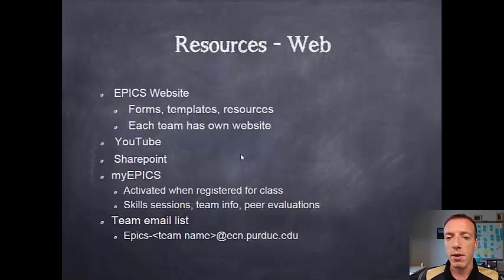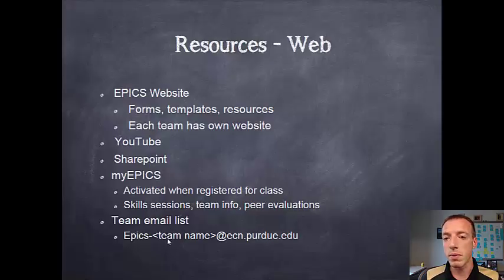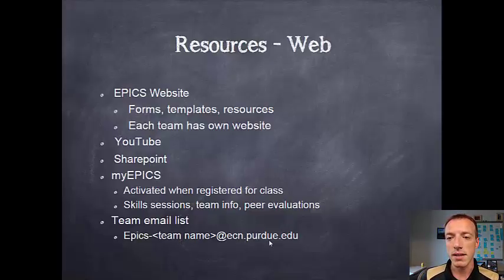The next resource is your team email list. A lot of teams don't use these much anymore — they use things like GroupMe instead — but you do still have a team email available to you. The format is epics-[your team's short name] at ecn.purdue.edu. So not Indiana School for the Blind but the ISBVI team's short acronym.